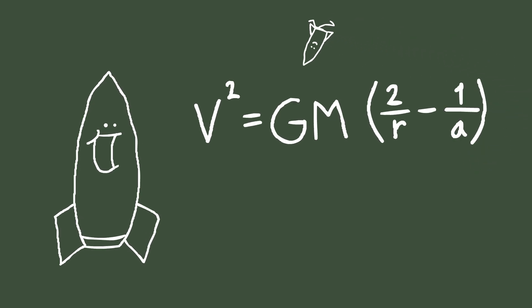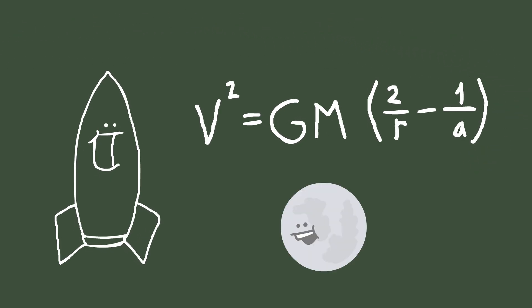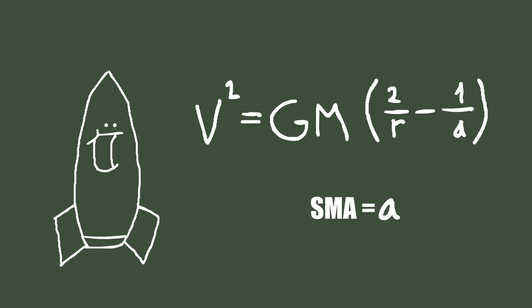V is velocity, G is the universal gravitational constant, M is the mass of the body, R is your current altitude, and A is the semi-major axis, like we saw before.